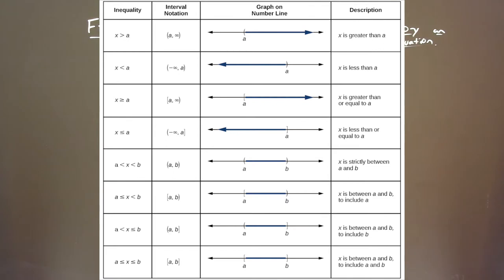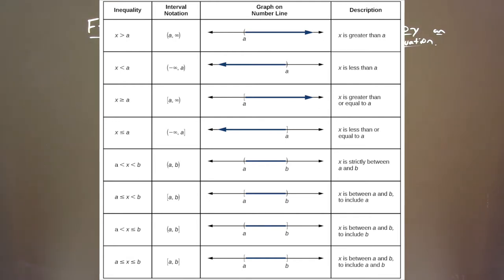If X is greater than A, then we have parentheses around A and infinity. Everything to the right of A — X is greater than A. If X is less than A, we have negative infinity to A with parentheses — X is less than A. If X is greater than or equal to A, we have brackets where the A is — X is greater than or equal to A.